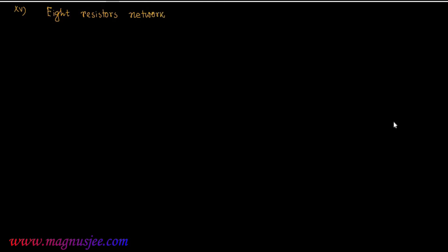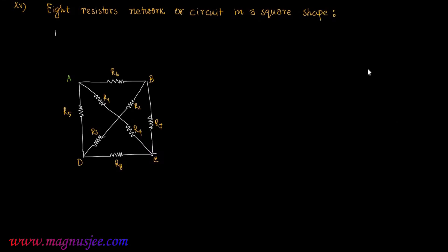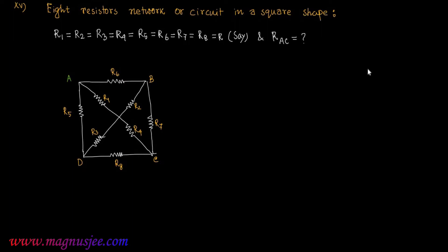This is a network containing eight resistors in a square shape. The value of all resistances are equal: R1 = R2 = R3 = R4 = R5 = R6 = R7 = R8 = R. We assume all resistances are the same and we have to find the equivalent resistance R_s between the two terminals A and C.